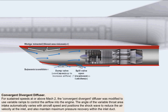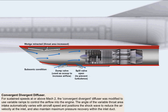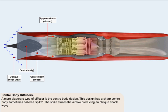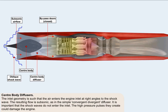The angle of the variable throat area intake automatically varies with the aircraft's speed and positions the shockwave to decrease the air velocity at the engine inlet and also maintain maximum pressure recovery within the inlet duct. A more elaborate type of diffuser is the centre body design. This design has a sharp centre body sometimes called a spike. The spike strikes the airflow producing an oblique shockwave. The spike will frequently be designed to produce several weak shockwaves rather than one strong one. The inlet geometry is then such that the air is drawn into the engine inlet at right angles to the shockwave, and the resulting flow is subsonic, as happens in the simple convergent-divergent diffuser.